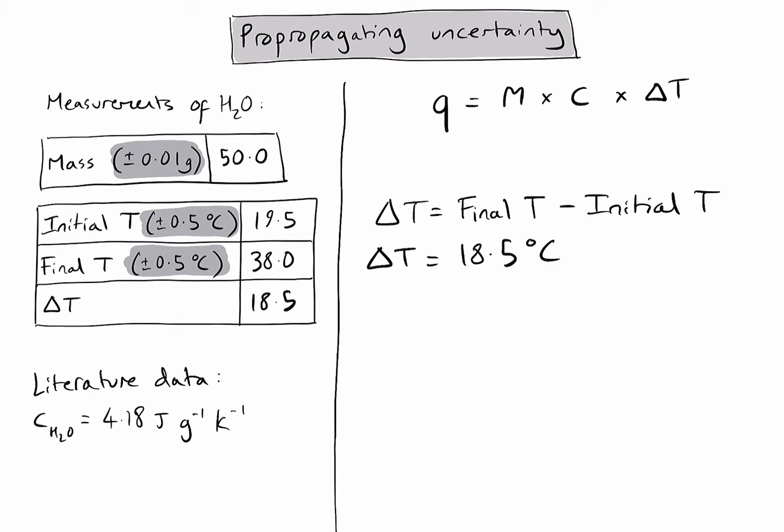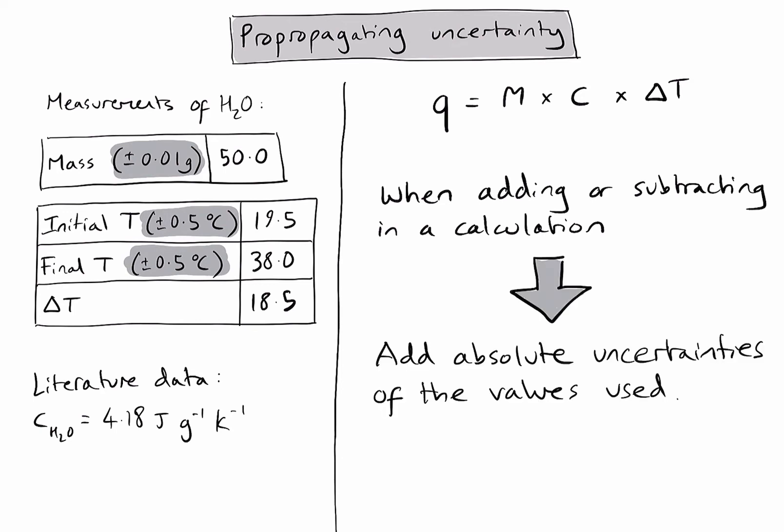So because we've done a calculation there, we also need to consider how uncertainty might be propagated. In this case, because I was adding or subtracting two values in the calculation, I need to add together the two absolute uncertainties that I can see in my table in grey. So in this case, because I've subtracted one of my temperature values from the other, the final temperature change is going to have an absolute or a total absolute uncertainty of 0.5 plus 0.5. So once I've calculated the total absolute uncertainty for that temperature change, I need to make sure that I put that in my table.